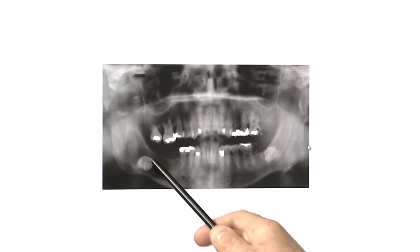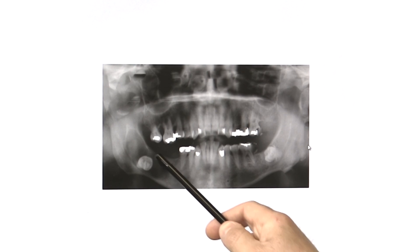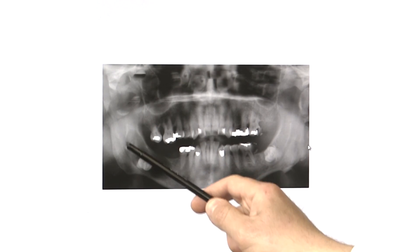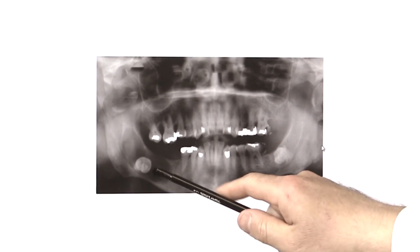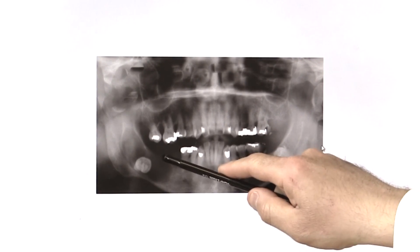The next picture we're going to look at is a similar example where you have an impacted wisdom tooth surrounded by a very large area of resorbed bone, which again can represent either a cyst or a tumor. This is a very dangerous situation because, as you can see, it's basically just a very thin shell of bone remaining before this jaw breaks.